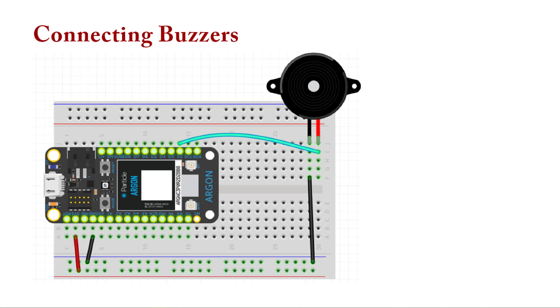How we connect it is really simple. There's a red and a black line on the buzzer and the black line is going to go to ground. The red line which is our power is going to go to a digital input.